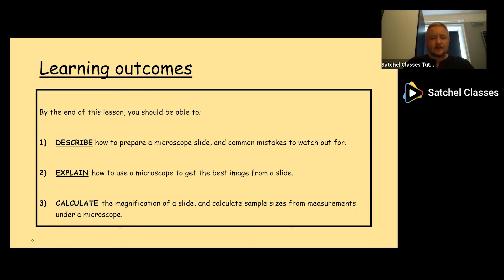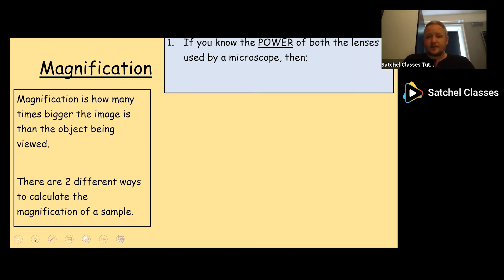The final thing then, calculate magnification of a slide and calculate sample sizes from measurements under a microscope. Magnification is how many times bigger the image is than the object being viewed. There are two different ways to calculate magnification of a sample under a microscope. The first method, if you know the power of both lenses used by a microscope, that's the power of the objective lens and the power of the eyepiece lens, then the formula for calculating it is simple. The total magnification is equal to the magnification of the eyepiece multiplied by the objective magnification.